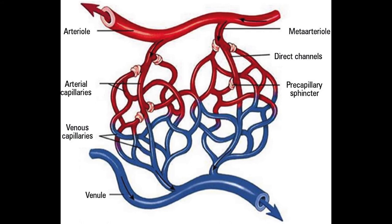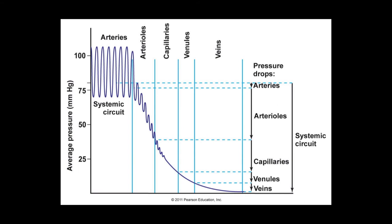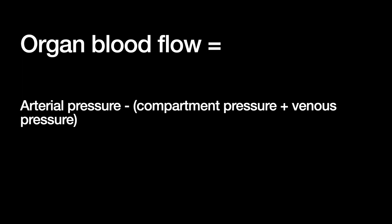So let's have a closer look at organ blood flow. Flow occurs down a pressure gradient. The pressure gradient in an organ will be arterial pressure minus the compartment pressure and the venous pressure. Because arterial flow is auto-regulated, and because the pressure in the arteries by the time it gets to the arteriolo-capillary interface is low — you can see from the graph here it drops to around 35 mmHg at this point — venous pressures become the main determinant for organ perfusion. So organ blood flow is driven by the arterial pressure but opposed by the compartment pressure in the organ and the venous pressure it empties into.